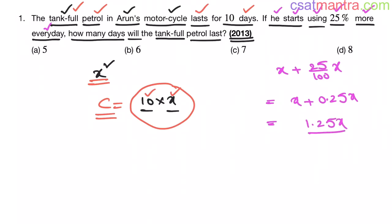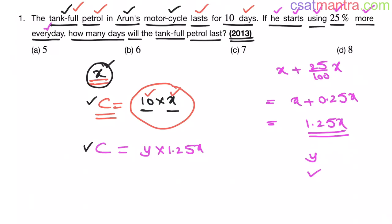Now when he uses 1.25x liters every day, we do not know how many days the tank full will last. Let's assume it will last for y days. The petrol consumed would be number of days into petrol consumed per day, that is y into 1.25x. This is the tank's capacity — the tank's capacity in both cases is the same. In the first case he uses x liters per day, in the second case he uses 1.25x liters per day. Now equating the capacities: